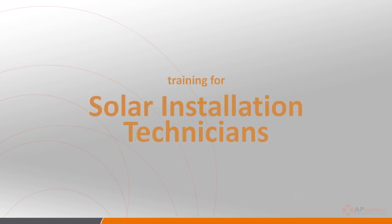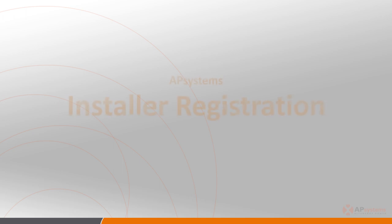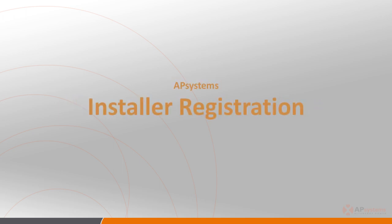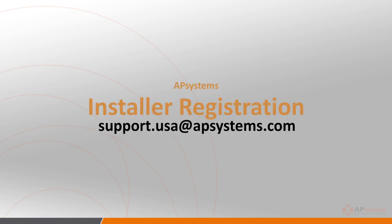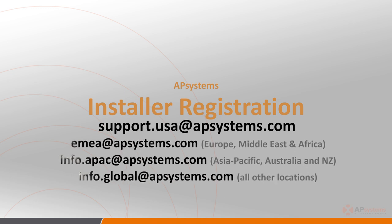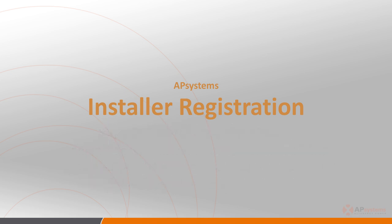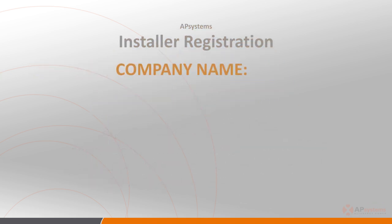Before we get started on the actual training, let's take a few seconds to talk about getting yourself registered as an installer with AP Systems. If you've not already done so, email AP Systems Technical Services at support.usa@APSystems.com or fill out the registration form on the AP Systems website to get yourself registered as an AP Systems installer. Please be ready to provide the following information: company name,